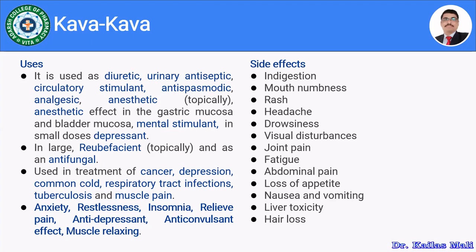Moving towards the side effects of kawakawa — no doubt it has potential health benefits, but kawakawa may also have certain side effects. For example, consuming large quantities may cause indigestion, mouth numbness, skin rash, headache, drowsiness, visual disturbance, joint pain, fatigue, abdominal pain, loss of appetite, nausea, vomiting, liver toxicity, and hair loss. These side effects are somewhat similar to those of ethyl alcohol.